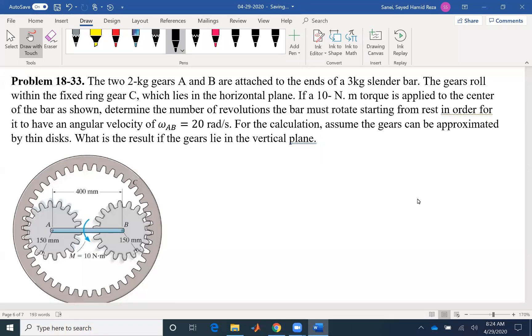Hello everyone. We are going to solve problem 33 of chapter 18. The two 2-kilogram gears A and B are attached to the ends of a 3-kilogram slender bar. Because it's slender, which means that we can find the moment of inertia as a function of mass and length, and we can ignore the thickness.